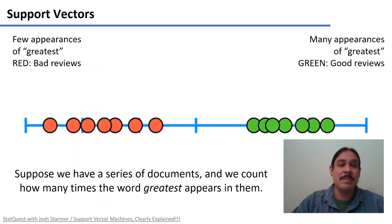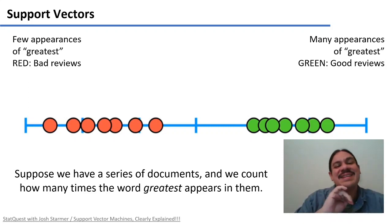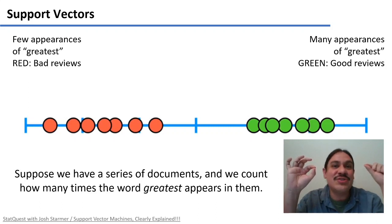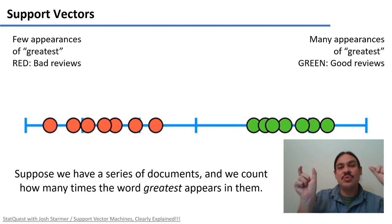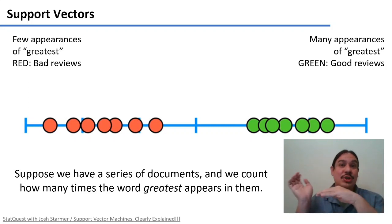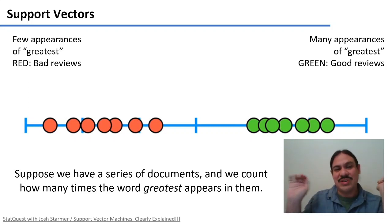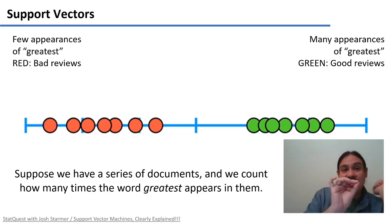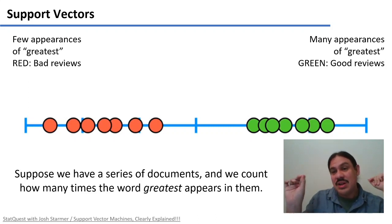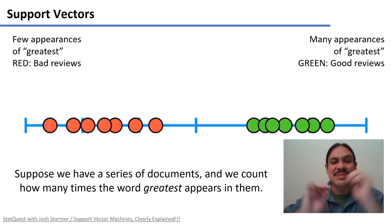Let's look at a very simple example. Let's say we have one dimension, which is just a line, and this line is the number of times that you have the word 'greatest' in a document. So this is the one feature that we have information for. We have two categories of documents: bad movie reviews on the left, marked in red, and good movie reviews on the right, marked in green. The bad movie reviews are probably on the left side, which maybe have zero, one, or two appearances of the word 'greatest'. On the other side, we have the green dots, which maybe have the word 'greatest' 10, 11, or 12 times.